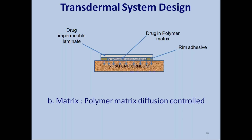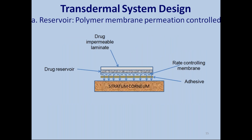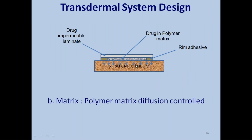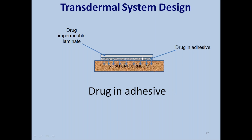The reservoir device is a four-layer system: backing laminate, drug reservoir, rate-controlling membrane, and adhesive. The matrix system has the drug-containing polymer matrix in direct contact with the stratum corneum with rim adhesive at the edges. The drug-in-adhesive system is the simplest — everything is embedded in one layer. All of you have understood these concepts today.